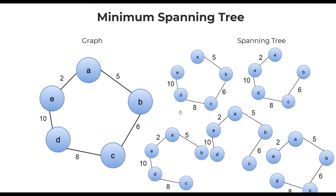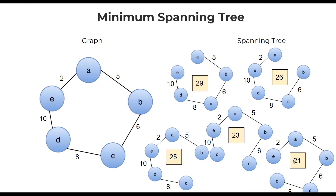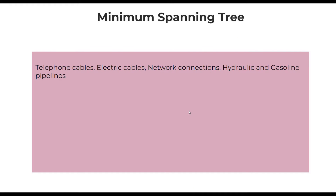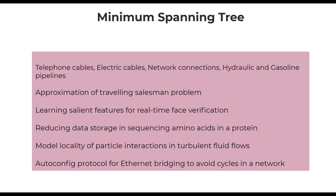Minimum spanning tree — the term minimum comes into picture only when we have weighted graphs. For all these spanning trees, if we calculate the total cost, we get different values, and the one with the minimum total cost becomes the minimum spanning tree. Minimum spanning trees are not necessarily unique — you can have more than one minimum spanning tree for a given graph. Why find a minimum spanning tree? The vertices could represent different cities or locations, and if we have to connect all these points with telephone cables, electric cables, or hydraulic pipelines, the aim would be to connect all points while minimizing the cost. There are also indirect applications such as approximation of the traveling salesman problem, real-time phase verification, amino acid sequencing, particle interaction, and Ethernet bridging protocols.